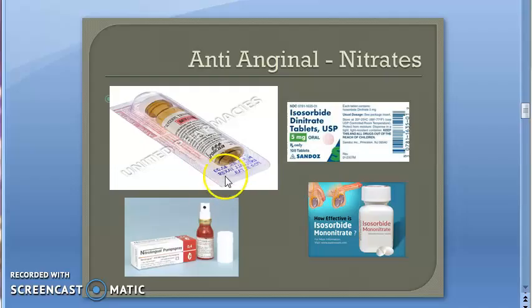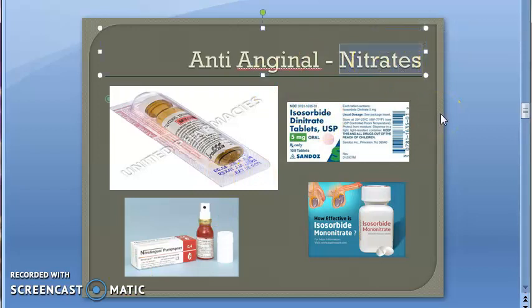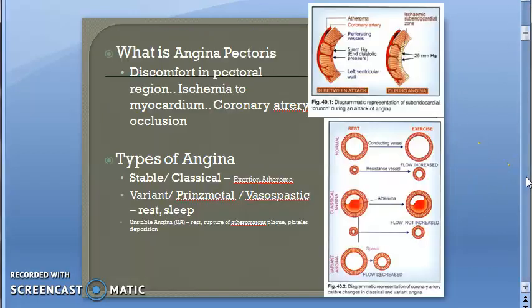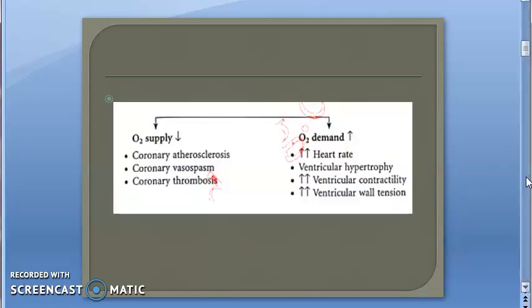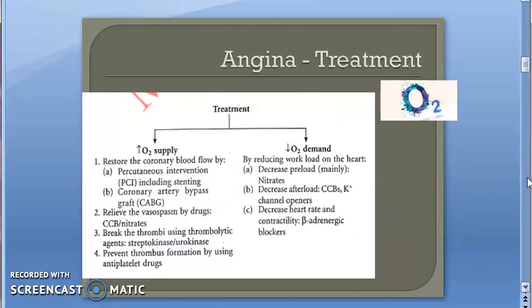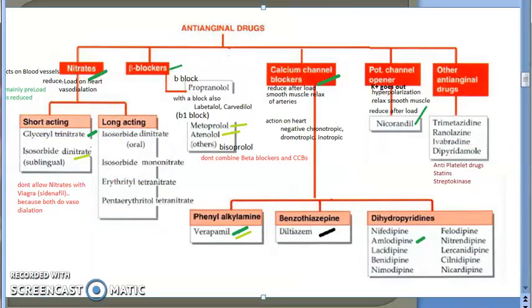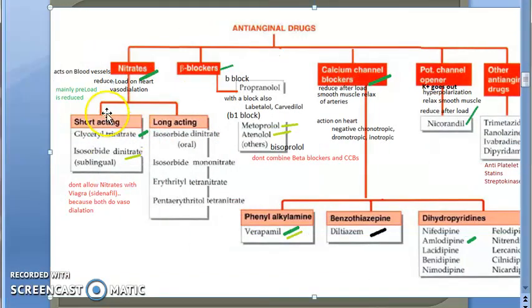Hello, this is on nitrates - very important for exams. We are in the anti-anginal and anti-ischemic drugs chapter. We have already covered what angina is, types of angina, when it happens, how to treat it, and what drugs are available. In that group, we are here at nitrates.